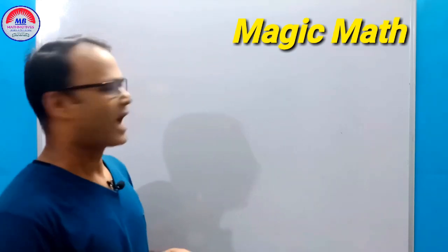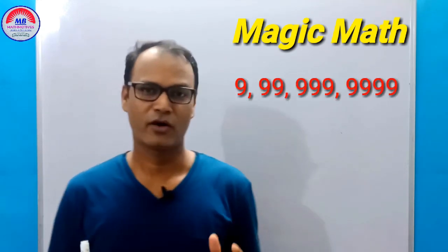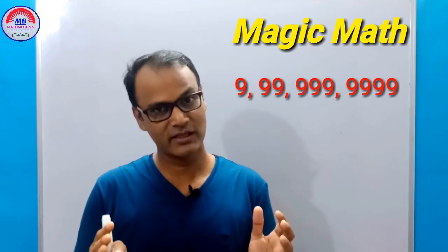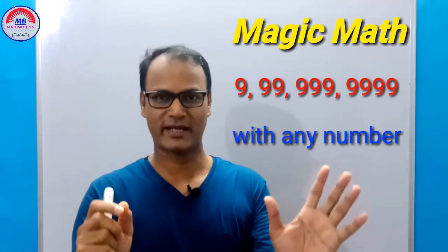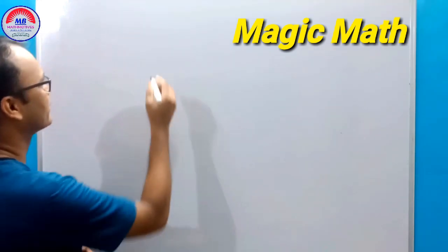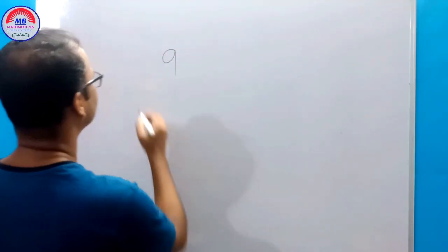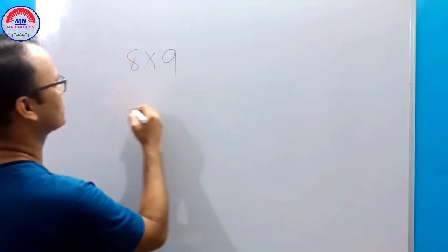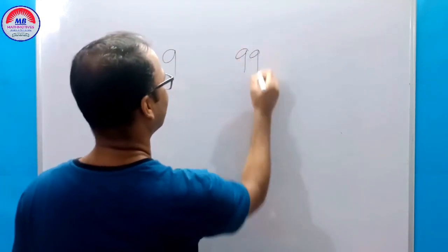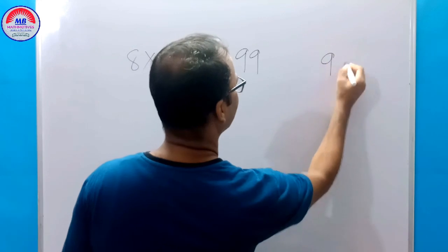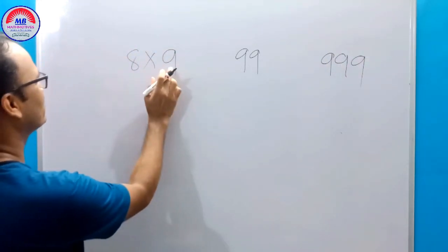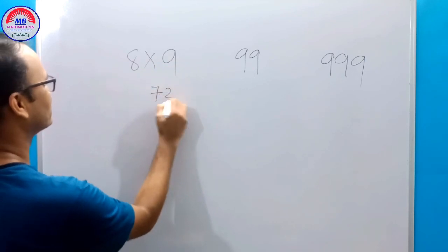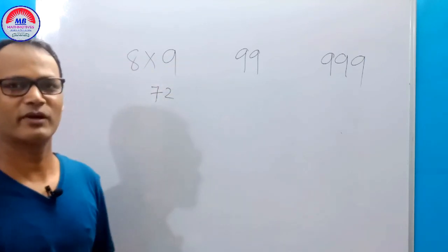You will see how to multiply 9, or 99, or 999, or 9999 with any number in just 2 seconds. For example, 8 into 9 — you get 72. It is very easy.